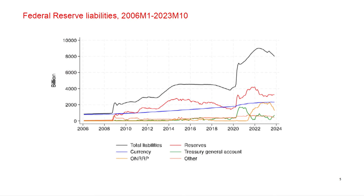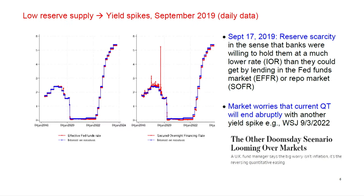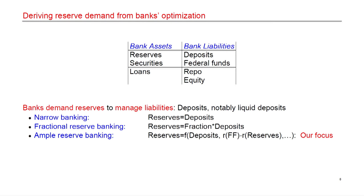To put the paper in perspective: the total size of the Fed's balance sheet goes up a lot more than it goes down. There was quantitative tightening around 2018-2019, which didn't end well with a big spike in short market interest rates suggesting too much reserve scarcity. The paper fits into the latest round of QT which is well underway. Regarding reserve demand: going back to the basics of banking, it comes from banks' liquidity management problems. We move from narrow banking — backing deposits one-for-one with reserves — through fractional reserve banking, to where we are now in ample reserves banking.